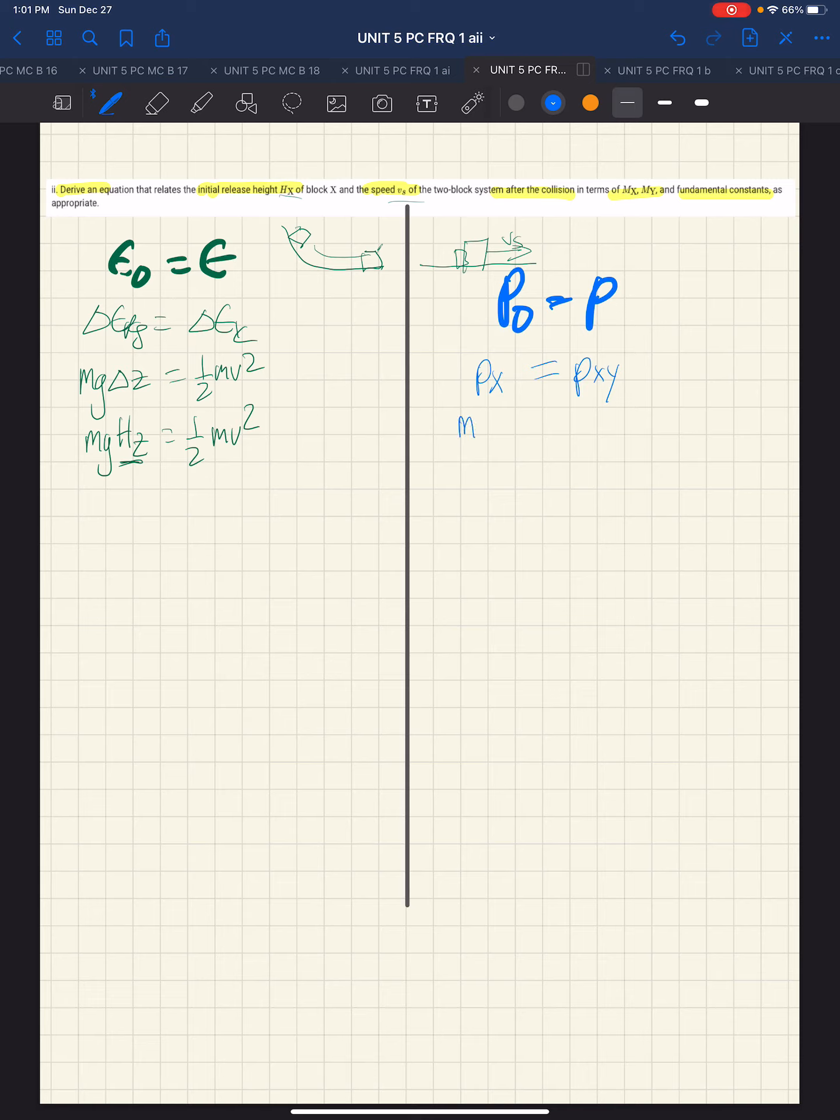Now, the mx vx is the momentum of x, and the momentum of x plus y is the mass of x plus the mass of y times velocity s. That's the velocity s we are looking for.